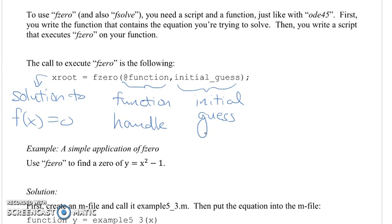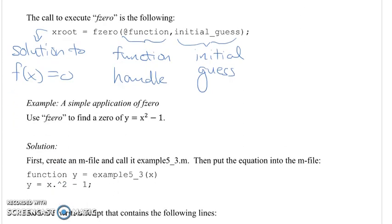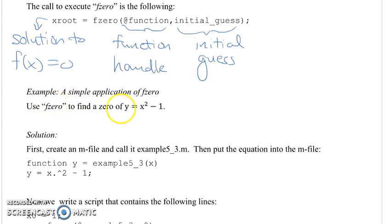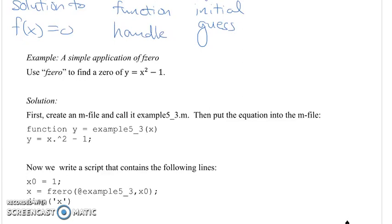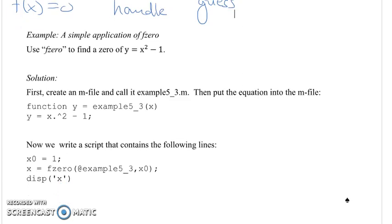That's how you call fzero. You also need to know how to write the function that fzero will call, which you point to with the function handle. Let's look at a simple example: we're going to use fzero to find a zero of y equals x squared minus 1. You can solve this by hand — the solutions that make y equal to 0 are x equals 1 or negative 1. This is a good example because you can verify fzero is giving the right answer.